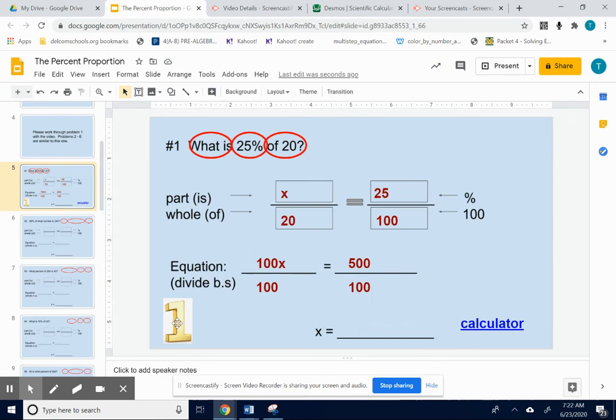And you guys don't have this little 1. I just wanted to make a point here. 100 divided by 100 is 1. So on the left you have 1x. Which is just x.